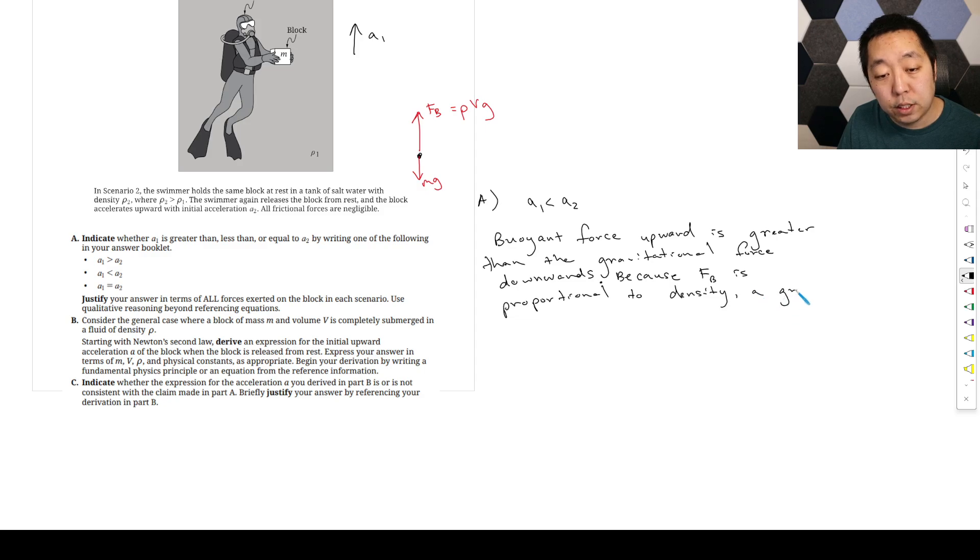A greater - well actually I guess A1 is less dense. So a lower density fluid, where rho 1 is less than rho 2, right? Rho 1 is smaller than rho 2, means the net upward force is less, and less net force means less acceleration.